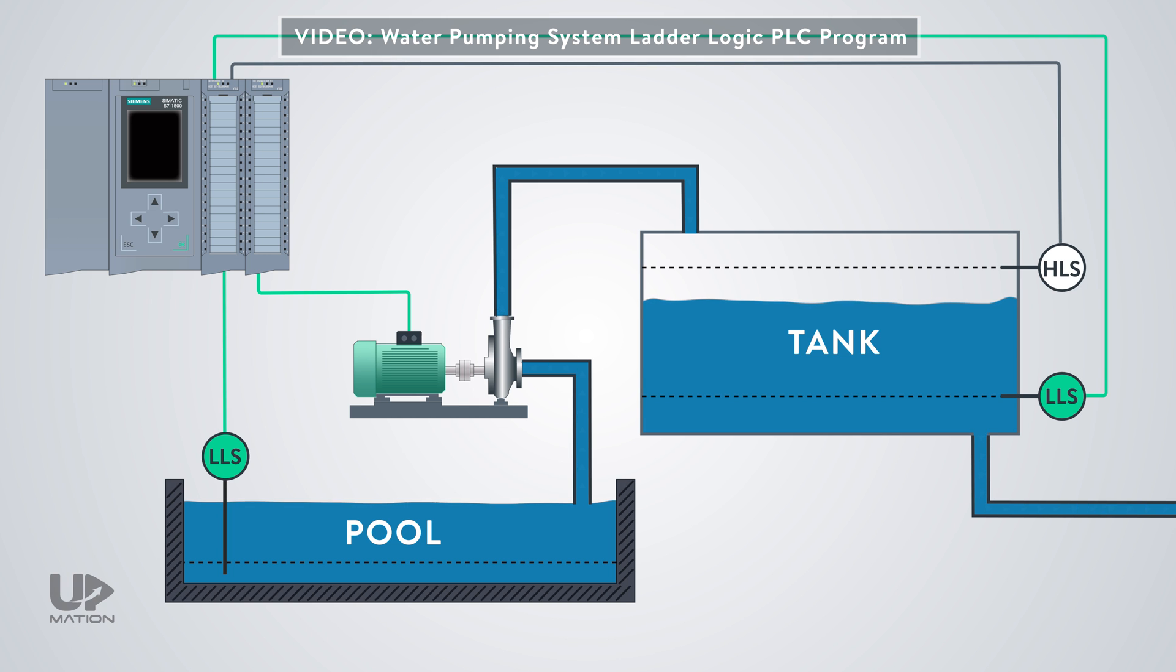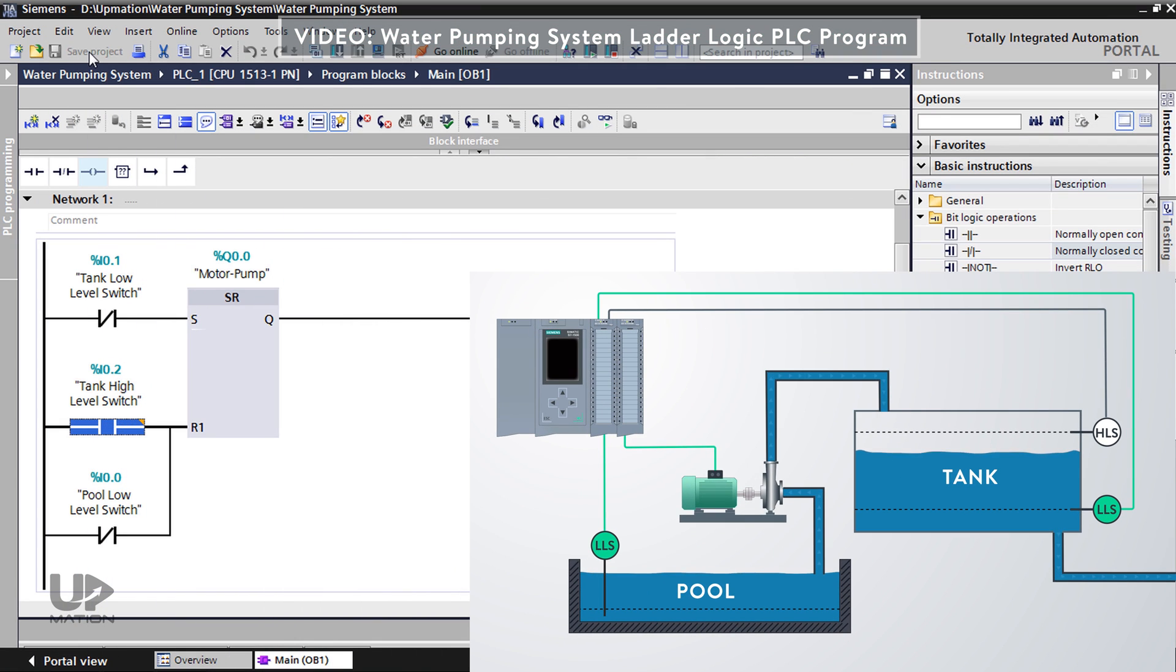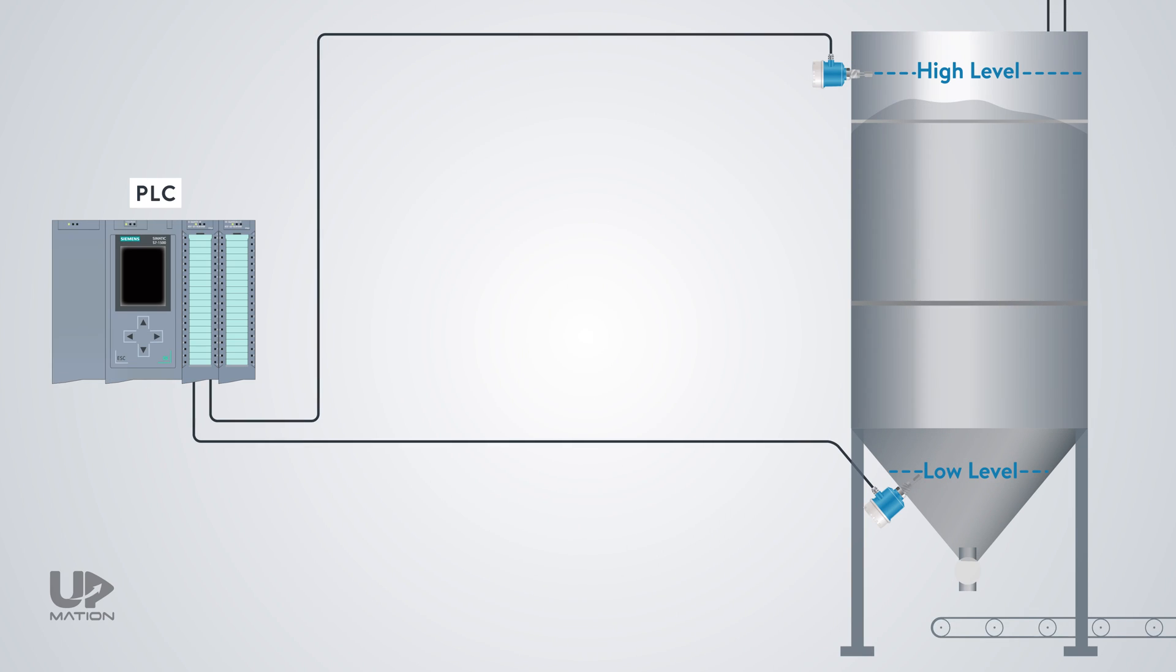In a previous video, we have written a PLC program for this process and we have considered all the level switch sensors as normally open ones. But in the real-world conditions when we are choosing the instrument switches or other types of discrete equipment for a process, we have to select which one should be exactly a normally open sensor and which one should be a normally closed sensor.